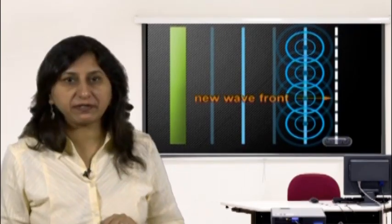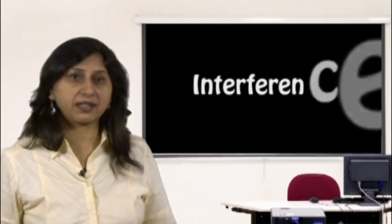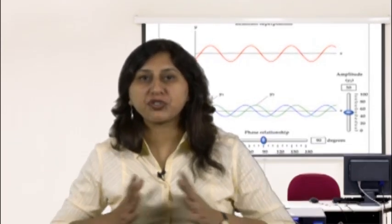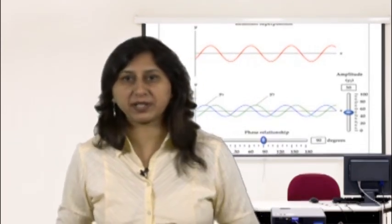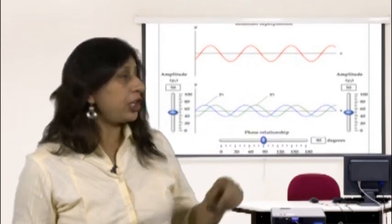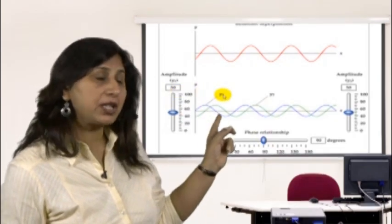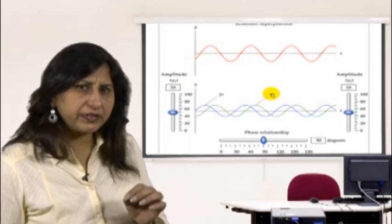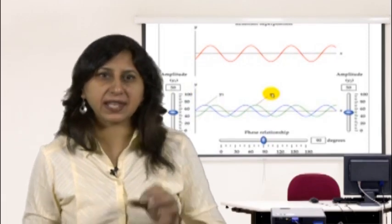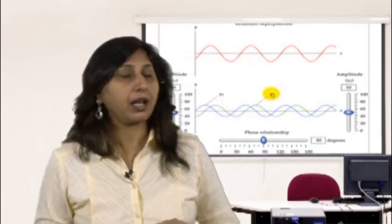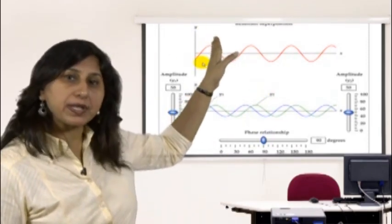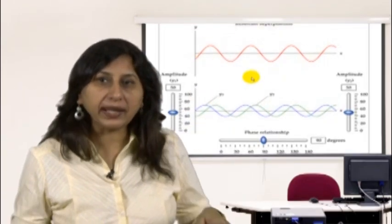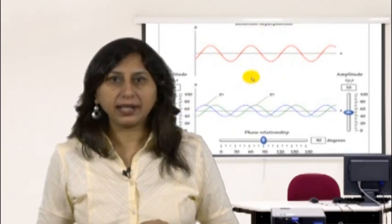Interference: notice at the bottom of the screen two waves y1 and y2, each with the same amplitude. The picture above shows what the two waves look like when they are added together.